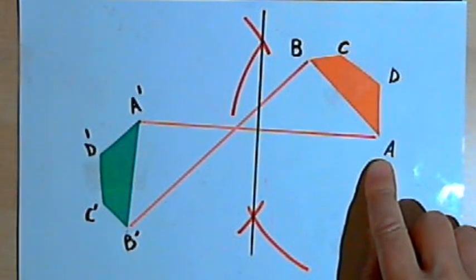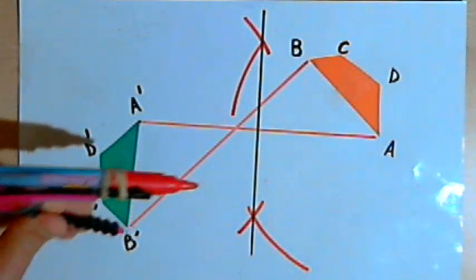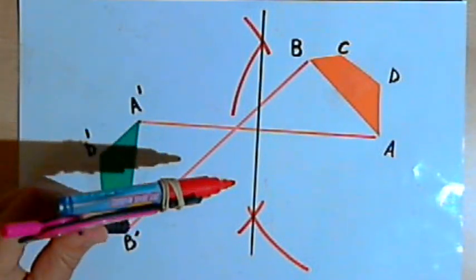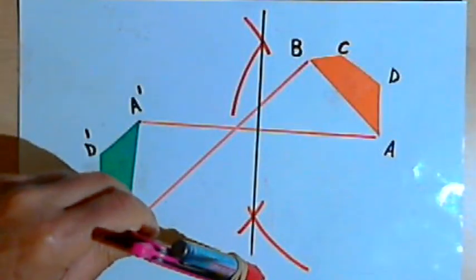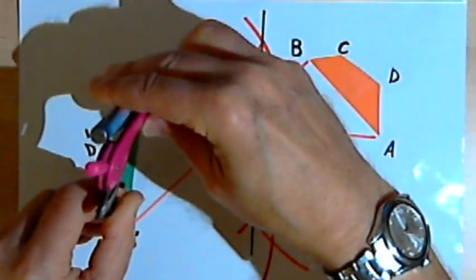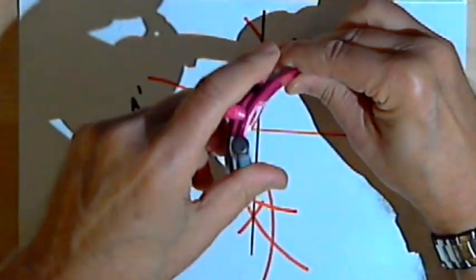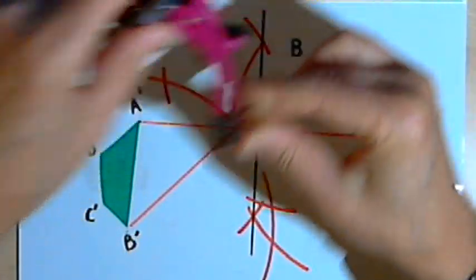And now I'm going to do the same process for the other line, B, B-prime. So I'll place the compass point at B-prime and once again draw some arcs, and then move the compass point to B and intersect those arcs with two more arcs.